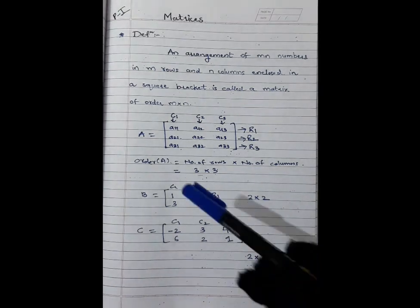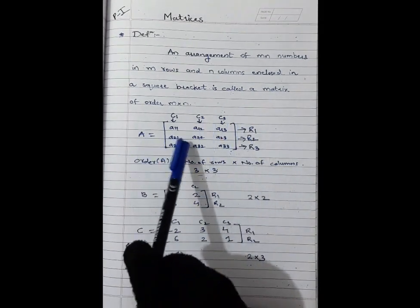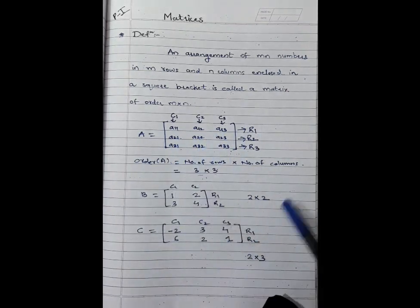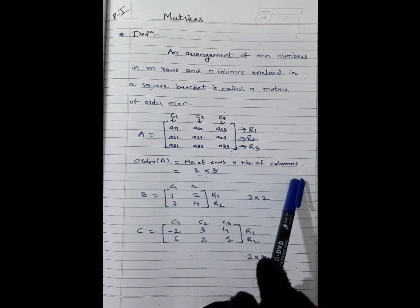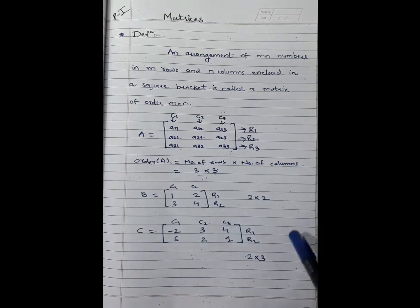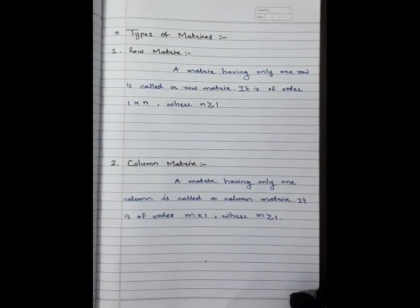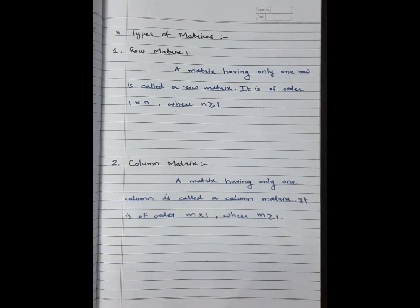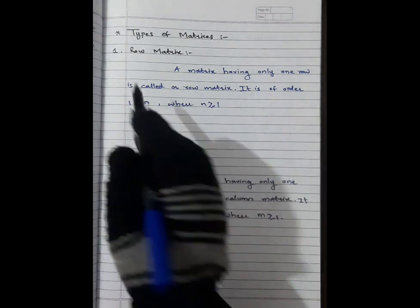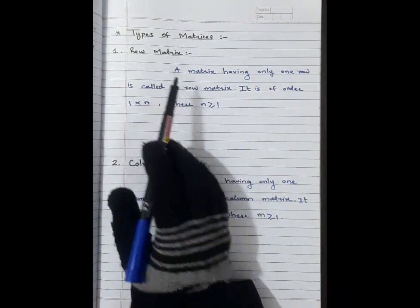These are the general elements of a matrix, and these are our constant matrix examples. The order is always written as number of rows into number of columns. Now next we will see types of matrices — there are many types of matrices and we will see each type one by one.